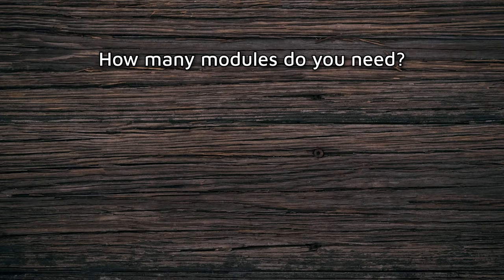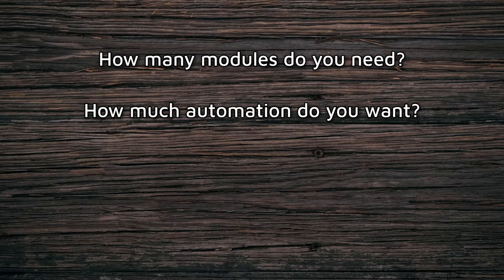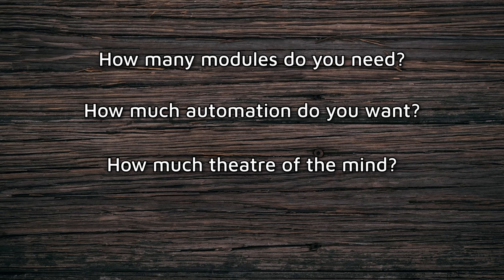First, let's talk about setting boundaries. You want to ask yourself three questions: how many modules do you really need, how much automation do you want, and how much theater of the mind do you like to rely on? For me, I like to have the minimal amount of modules possible. I don't want to have to update everything every time there's a Foundry update — things break and you have to go through each one individually. So personally, I try to stick around 30 modules.